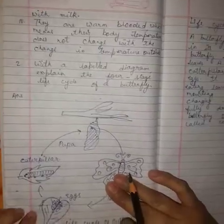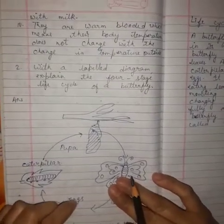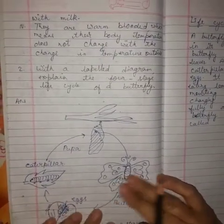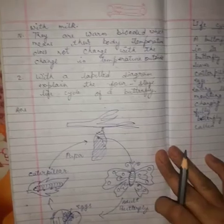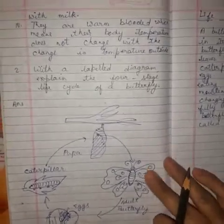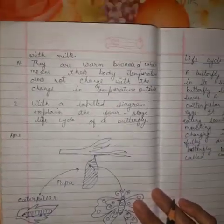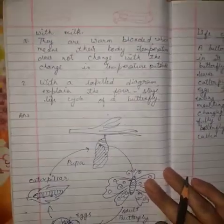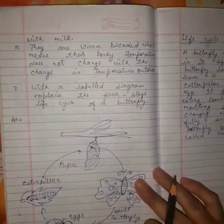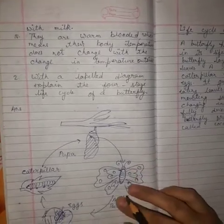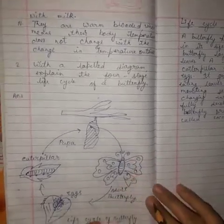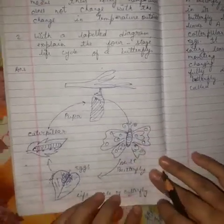The fourth feature of mammals is that they are warm-blooded, which means their body temperature does not change with changes in outside temperature. Those were the features of mammals.